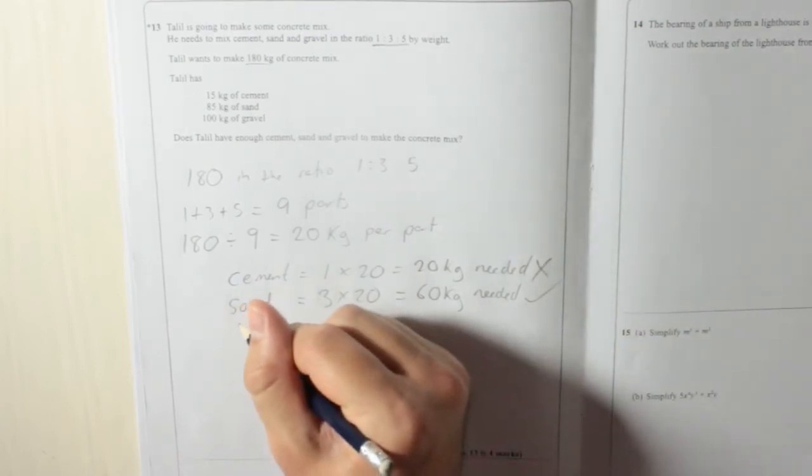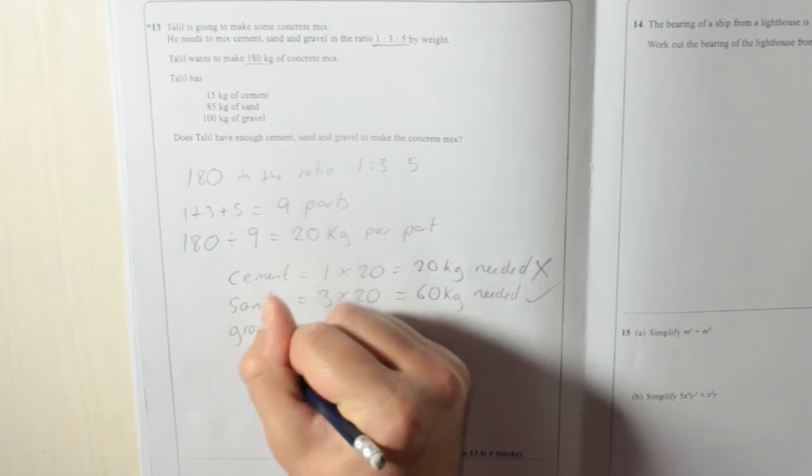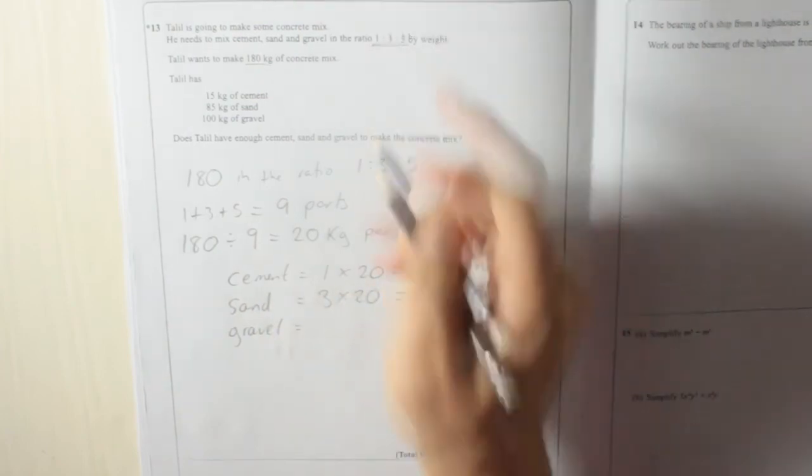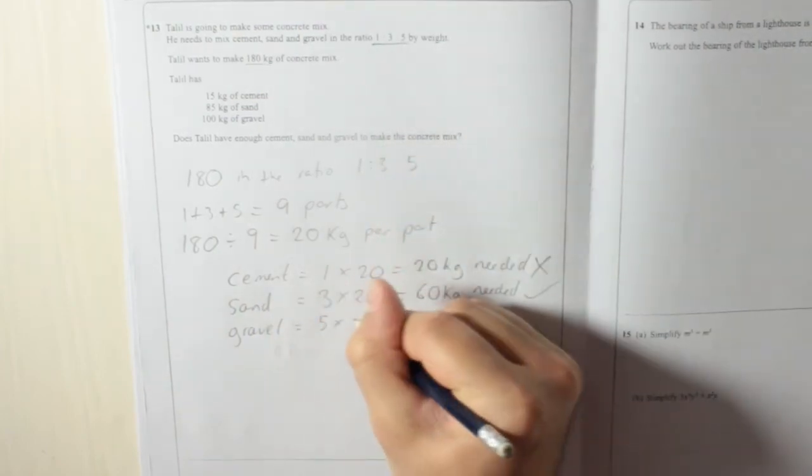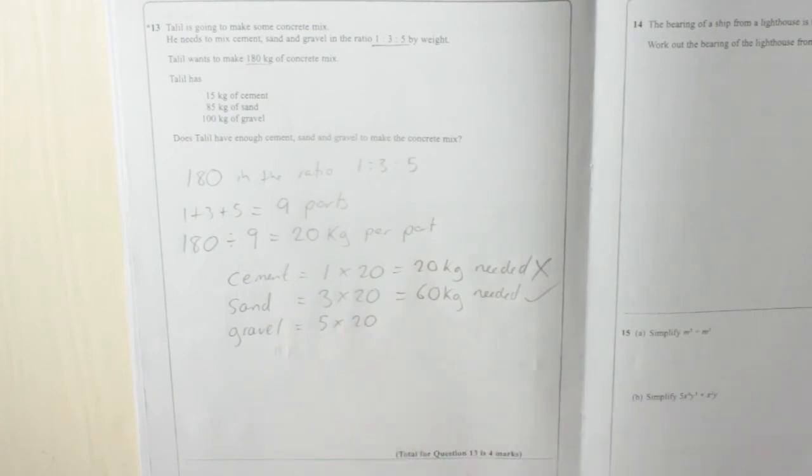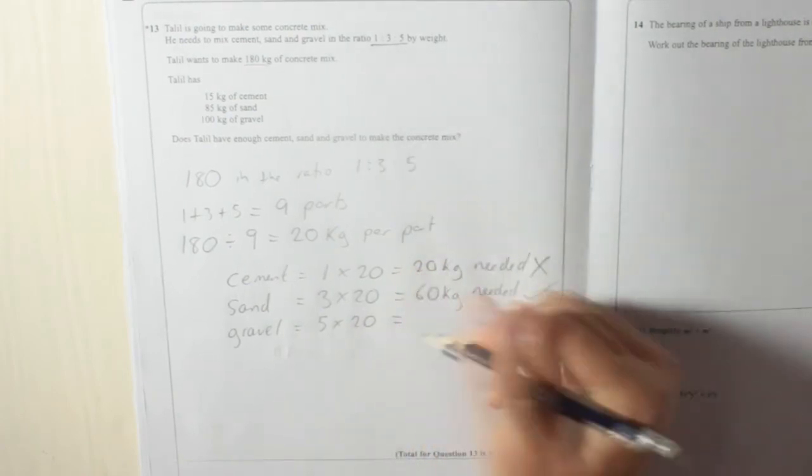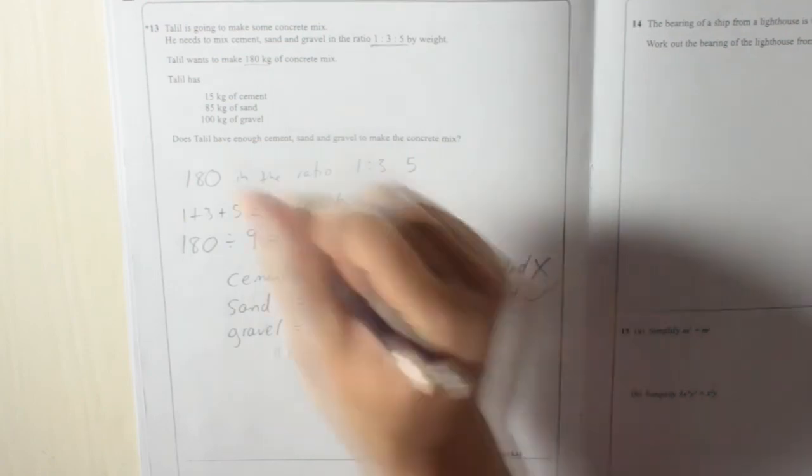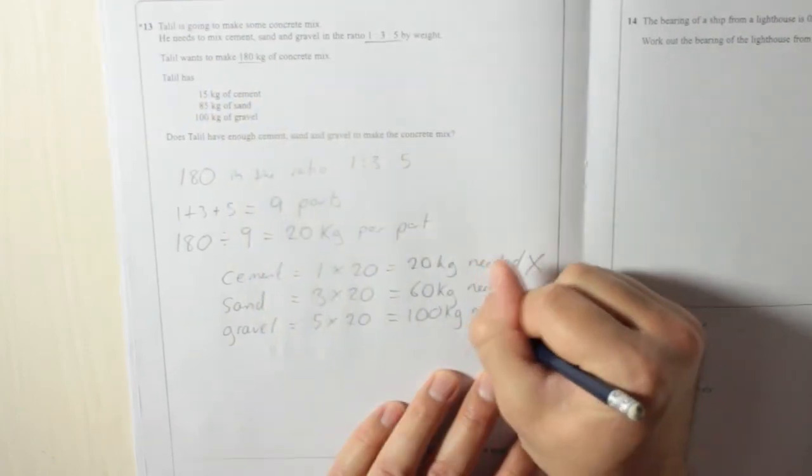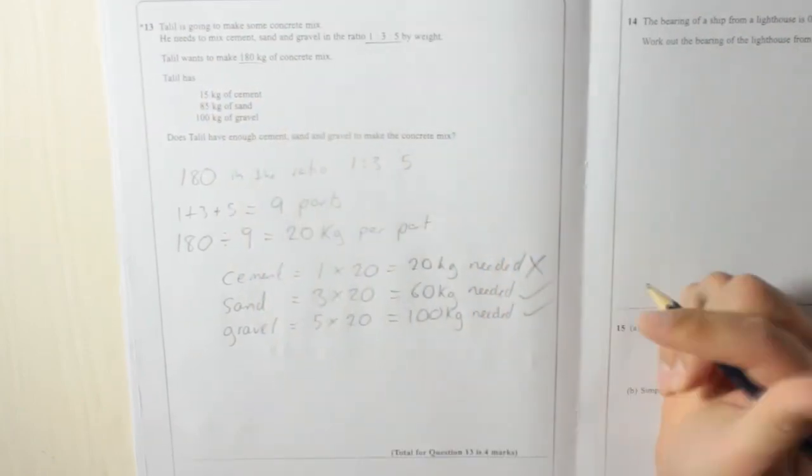And then the last one is gravel. That's five parts, five times 20, because every part is 20 kilograms, is 100 kilograms. And he has 100 kilograms of gravel, so you can tick that.